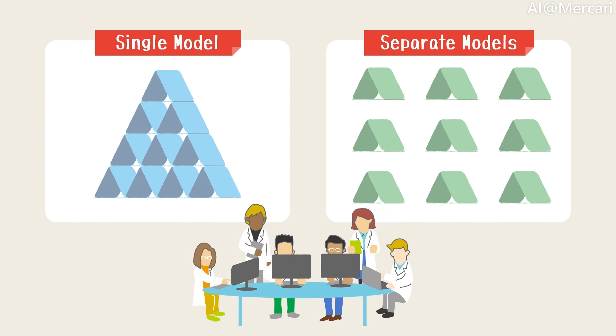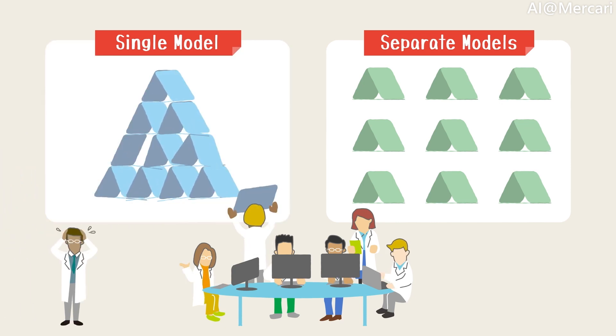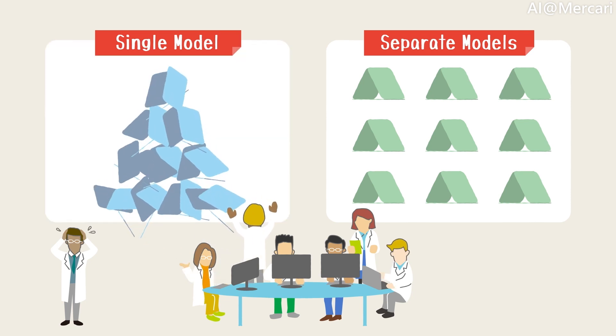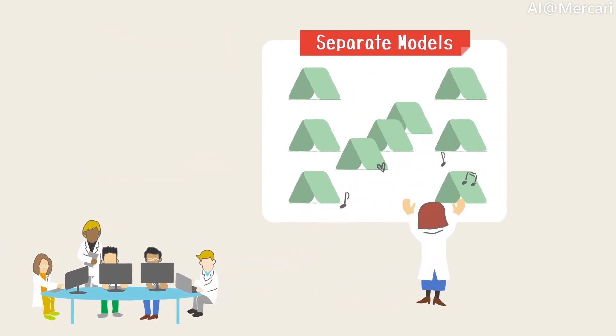For example, if we wanted to improve the performance of a given class, it would most likely affect others. It would be a disaster if we tweaked parameters for a class and accidentally let all illegal items pass through unnoticed. Instead, we separated the models into smaller policies that focus on specific classes of problems.